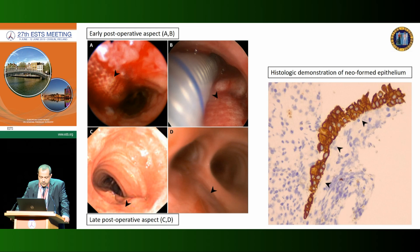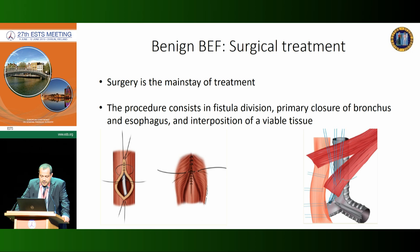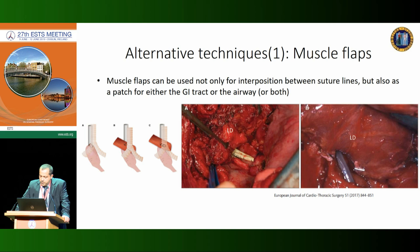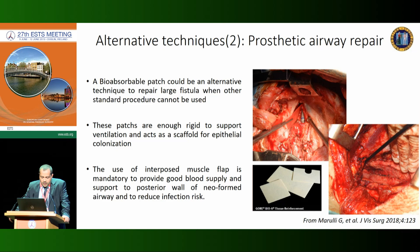We obtained biopsies of the tissue surrounding the patch and demonstrated neo-formed epithelium. In conclusion, for benign bronchoesophageal fistula, surgical treatment is the treatment of choice. The gold standard procedure consists of fistula division, thoracotomy, primary closure of the bronchus, double-layer suture of the esophagus, and interposition of viable tissue. Muscle flaps can be used not only for interposition but also as a patch for repair of the gastrointestinal tract and airways in very large fistulas. A bioabsorbable patch can be used as an alternative technique for large fistulas where standard procedures cannot be used or are too risky — these patches are rigid enough to support ventilation and act as a scaffold for epithelial colonization. Interposed muscle flap is mandatory to provide blood supply and reduce infection risk. Thank you very much for your attention.